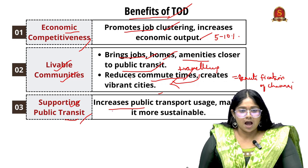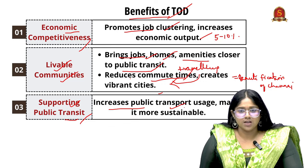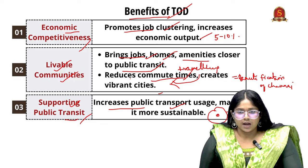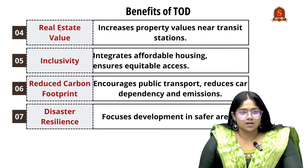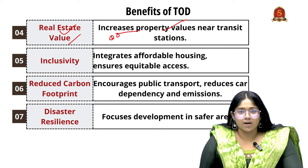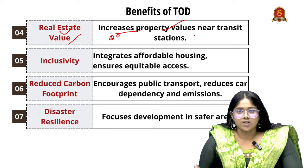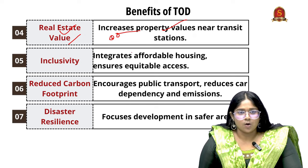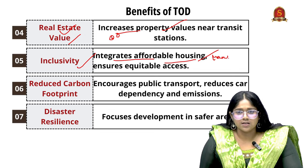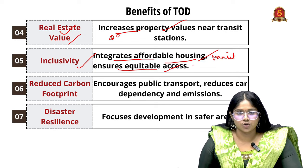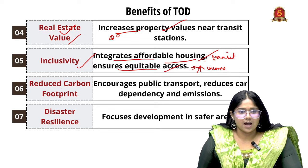Next is supporting public transit — having high density of development near the transit system can increase public transport usage, bringing people together and providing a more sustainable way to reach transit areas. Next is real estate value — having a transit system near an urban area increases the property value of that land, so cities can invest in such lands. Next is inclusivity — integrating affordable housing with transit areas ensures equitable access to opportunities such as jobs, increasing income.